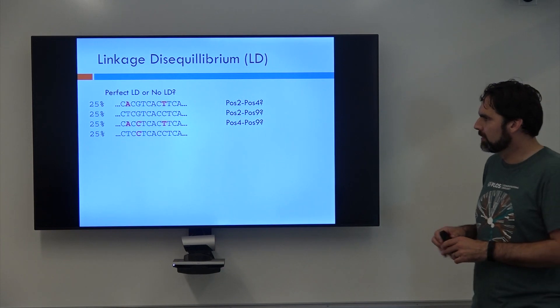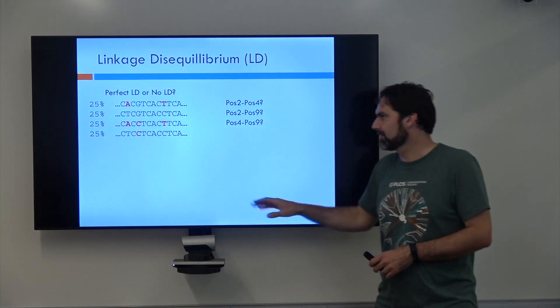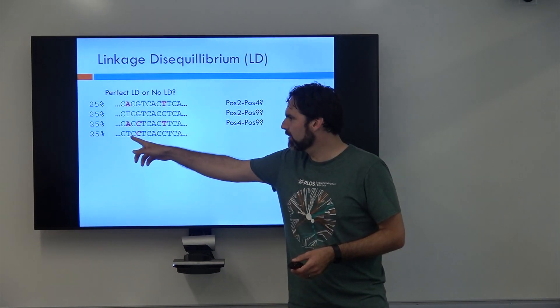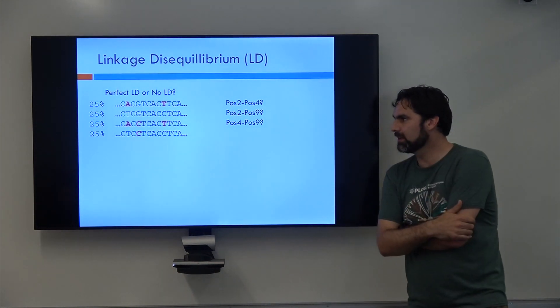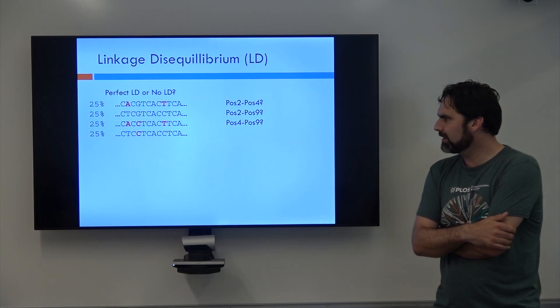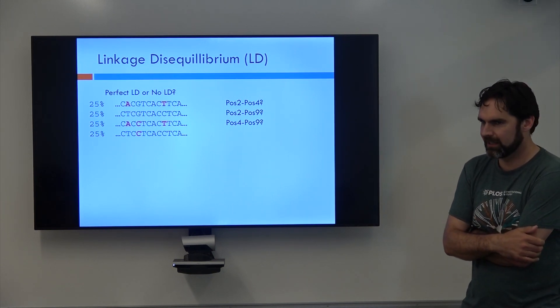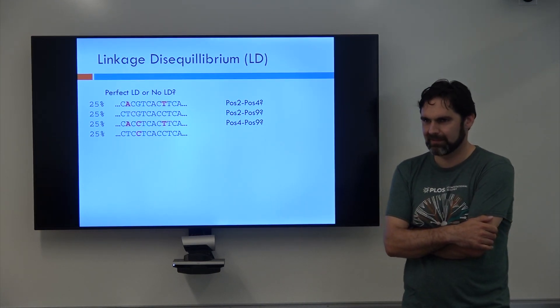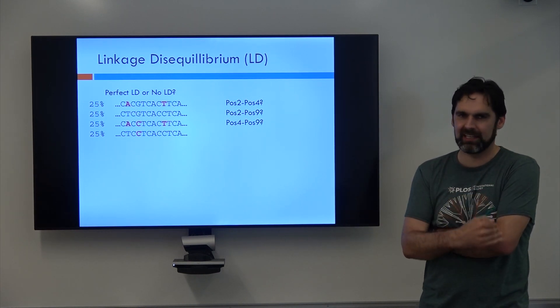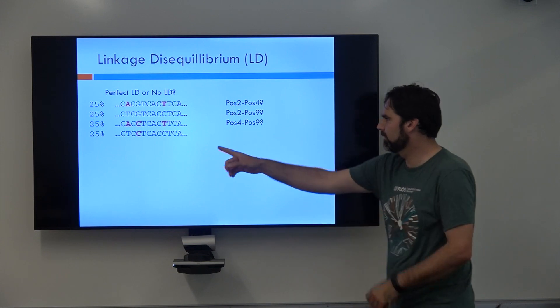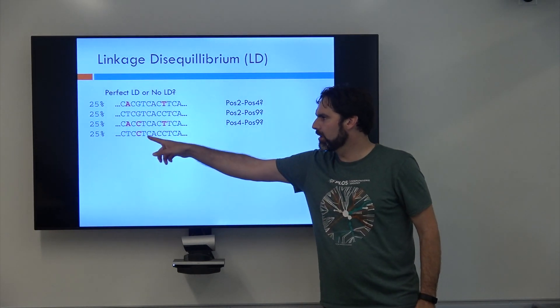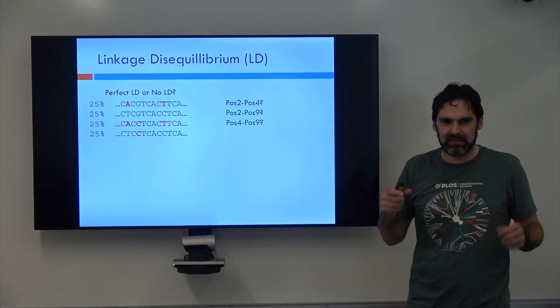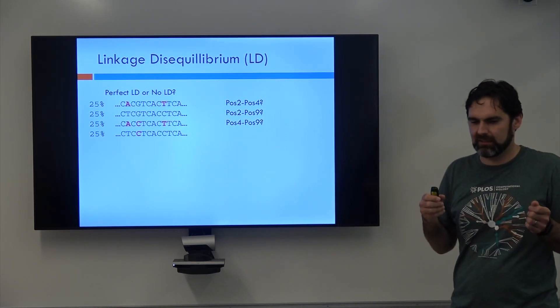Okay. So just real quickly, if we have three variants now, let's play the same game again. Is there perfect LD or no LD? So between positions two and four, these guys, is there LD between those? No. If I tell you what A is, do you know anything about the other one? No, right? So that's no LD. And between positions two and nine, that's perfect LD, right? If you see an A, you know you have a T. And then between four and nine, again, knowing that you have C doesn't tell you anything about this position. And so what they're saying is even in a really small region, you can have like perfect LD and no LD.